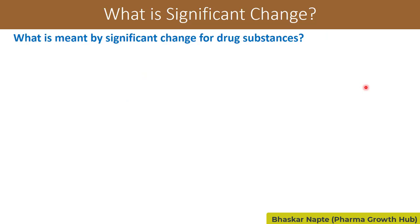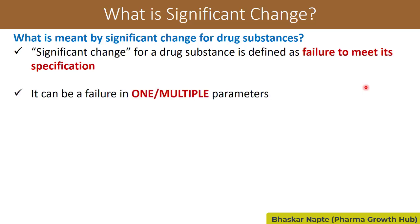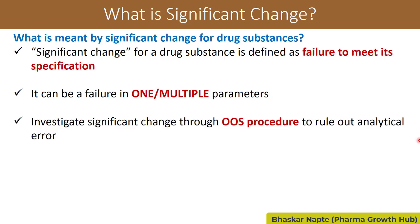What is meant by significant change for a drug substance? Significant change for drug substance means if the drug substance doesn't meet the specification. If your batch does not meet the specification, you can say the batch under stability study — at intermediate or accelerated condition — has met with significant change. Once you come across a significant change, you have to investigate it through the OOS procedure, because for drug substances significant change means failure in meeting the specification.